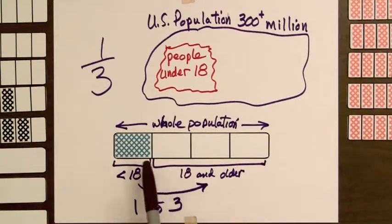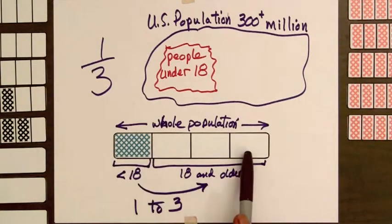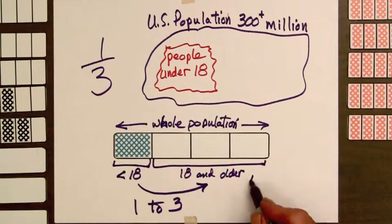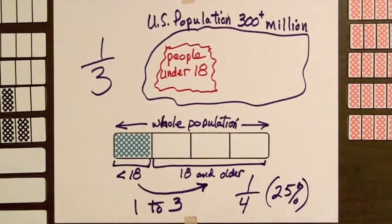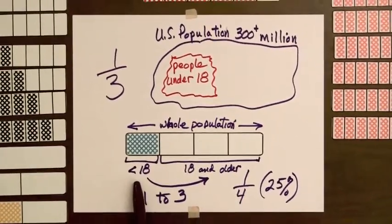And we can see that a bar with one part shaded out of 4 represents one-fourth. So one-fourth of the people, or 25% of the population, is under 18 years old.